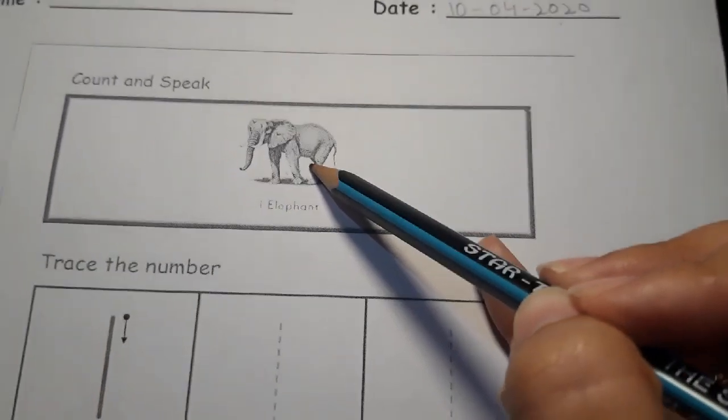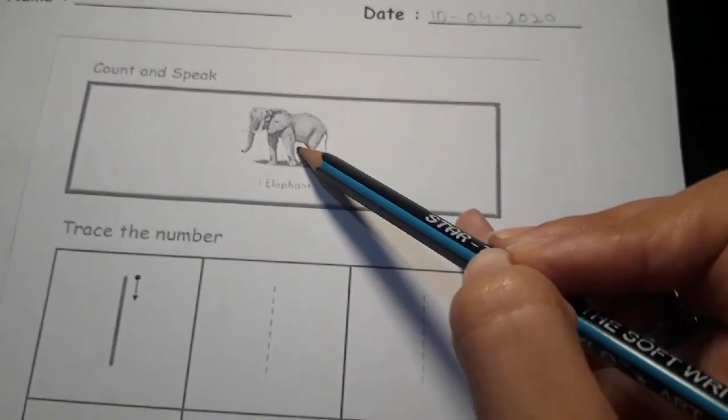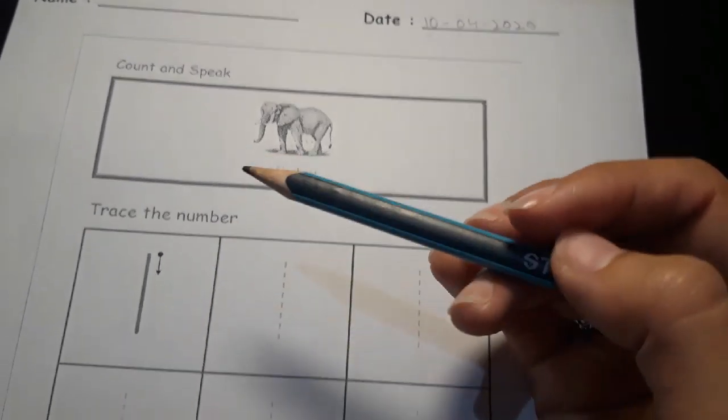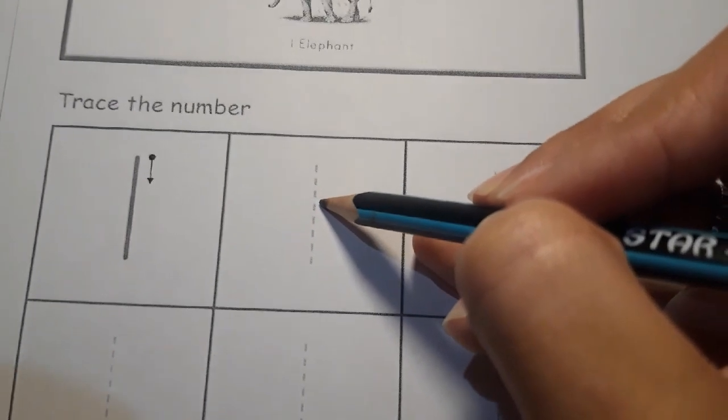Elephant is an animal. It's such a huge animal. You can show them the picture of the elephant as well to increase their vocabulary, their knowledge. So tracing number one is very easy.